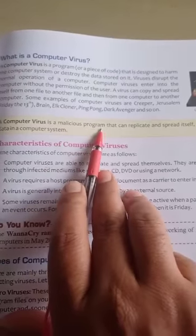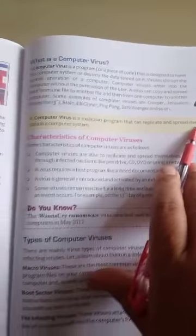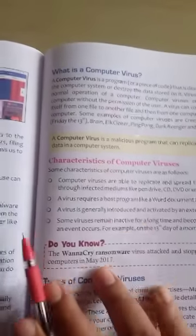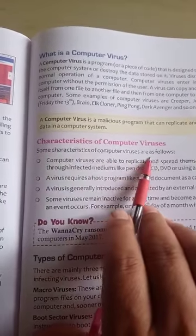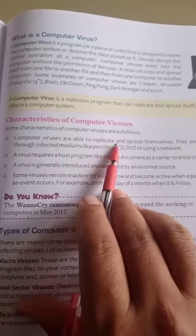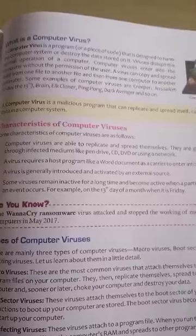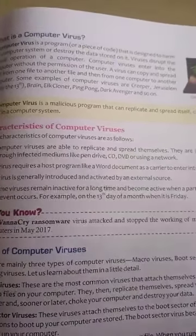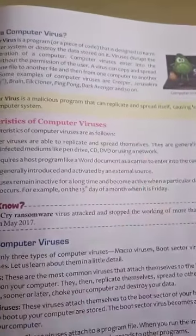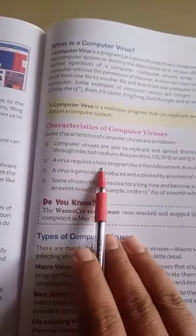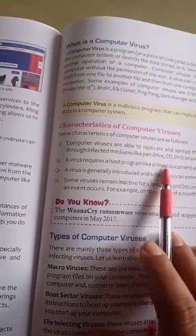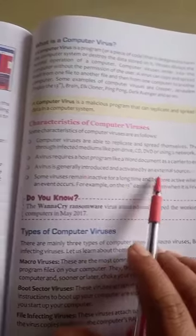A computer virus is a malicious program that can replicate and spread itself, causing loss of data in the computer system. Some characteristics of computer viruses: they are able to replicate and spread themselves. They are generally spread through infected media like pen drives, CDs, or DVDs, or using a network. A virus requires a host program like a Word document as a carrier to enter the computer.